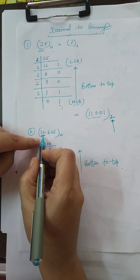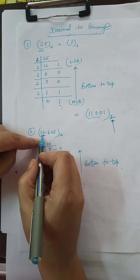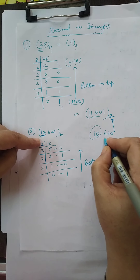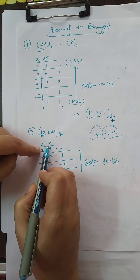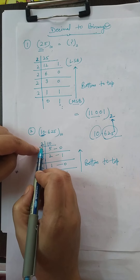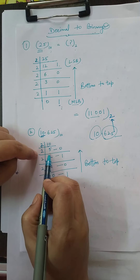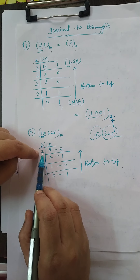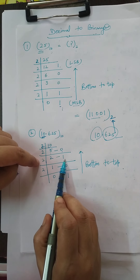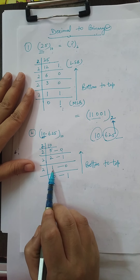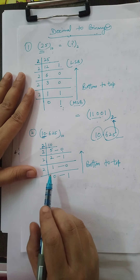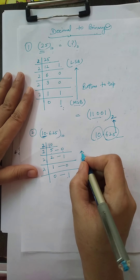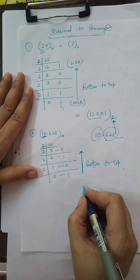The next number contains a decimal point: 10.625. This number has a whole part and a fraction part. First, write the whole part, which is 10, and divide it by 2. 10 divided by 2 gives quotient 5 and remainder 0. Again dividing 5 by 2 gives quotient 2 and remainder 1. After that, 2 divided by 2 gives quotient 1 and remainder 0. So reading the answer from bottom to top, the answer is 1010.